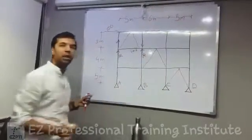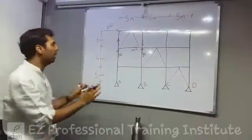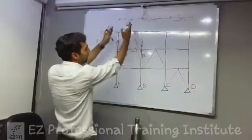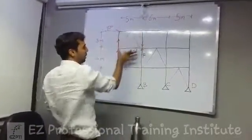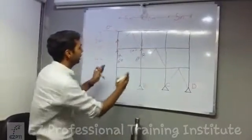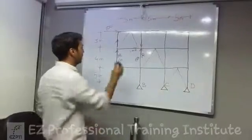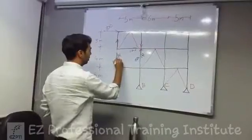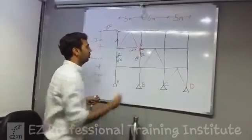These are the reactions. And what will be the value? 100 into 3 is the moment, 300. Divide by this lever arm - 300 by 5 meter, this is the 5 meter distance. So the reaction value will be 60. And the direction will be opposite to this. So this direction is actually like this.